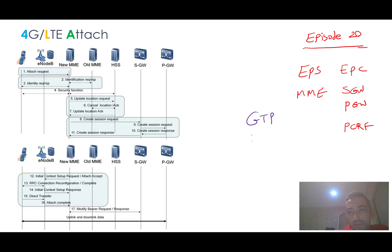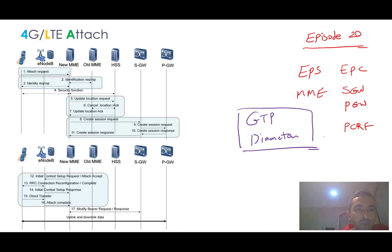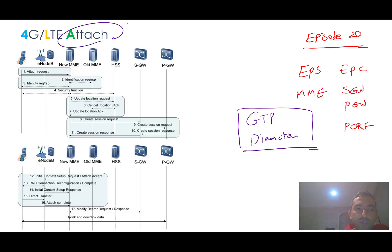Now we want to go through the first scenario of the LTE network, which is the Attach procedure — similar to location update or IMSI attach in the CS scenario. This happens when the subscriber wants to register in the EPS, meaning they want to register in the data network of 4G, or in other words, in the Evolved Packet Core.